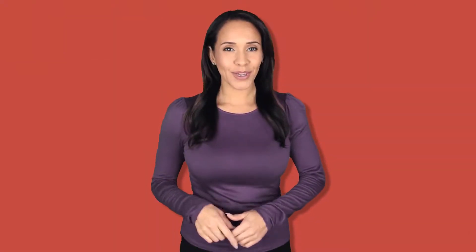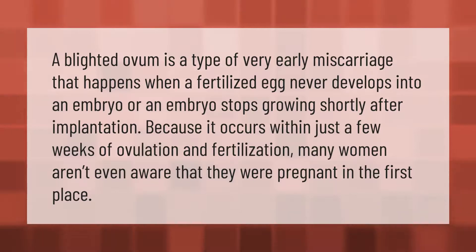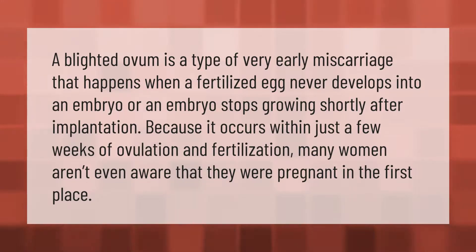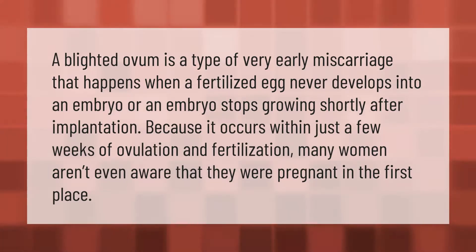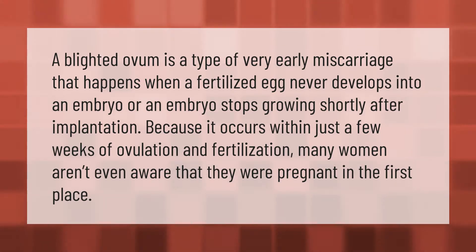A blighted ovum is a type of very early miscarriage that happens when a fertilized egg never develops into an embryo, or an embryo stops growing shortly after implantation. Because it occurs within just a few weeks of ovulation and fertilization, many women aren't even aware that they were pregnant in the first place.